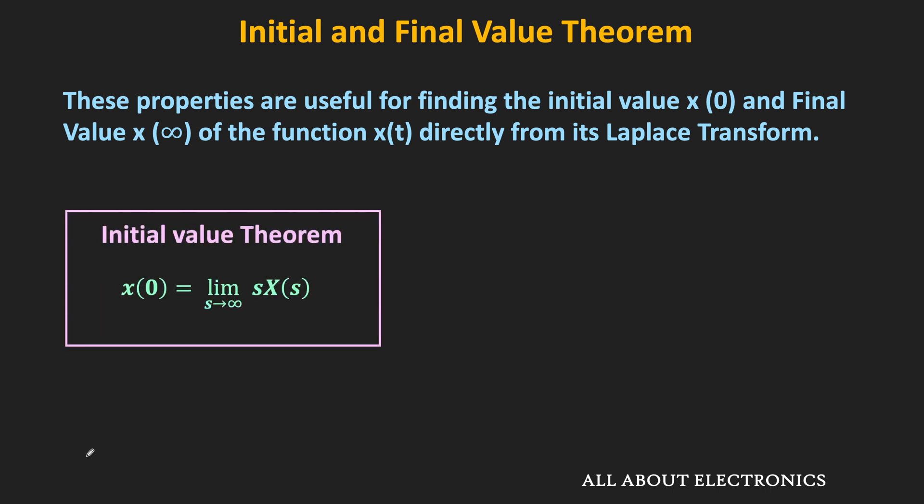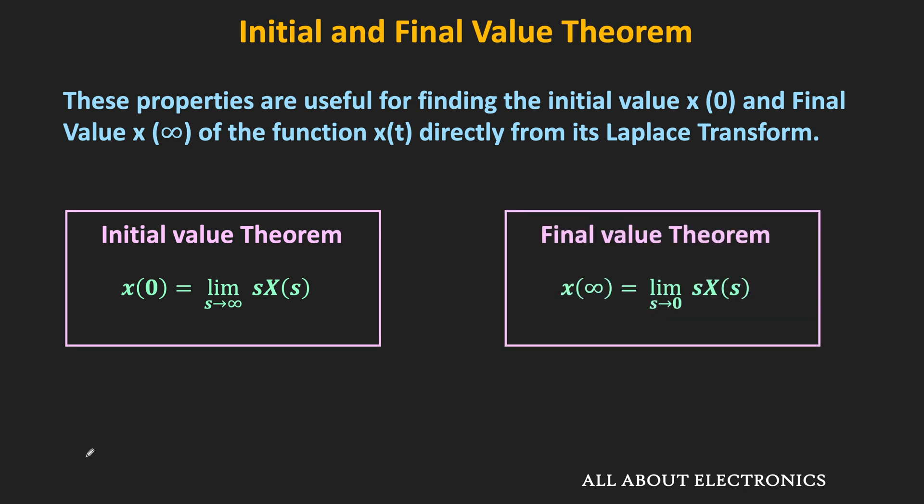As per the initial value theorem, the value of some function x at time t = 0 can be given as: limit s→∞ of s·X(s), where X(s) is the Laplace transform of x(t). Similarly, as per the final value theorem, the value of that function at time t = infinity can be given as: limit s→0 of s·X(s). Using these two theorems, from the Laplace transform itself, we can find the value of the function at t = 0 and t = infinity, which is very useful during circuit analysis.